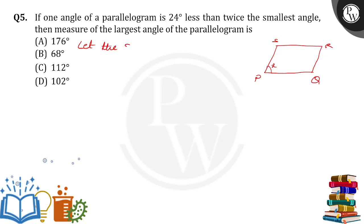Let the smallest angle is equal to X. Then one angle of a parallelogram is 24 degrees less than twice the smallest angle. If the smallest angle is X, then what about the other angle?